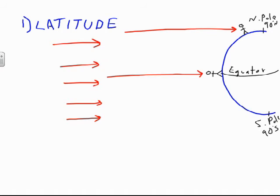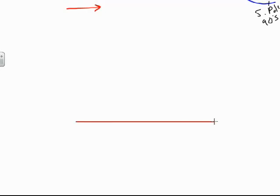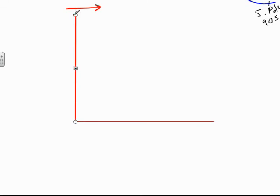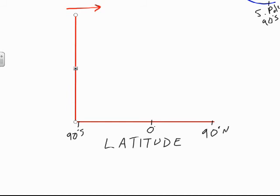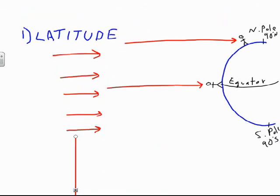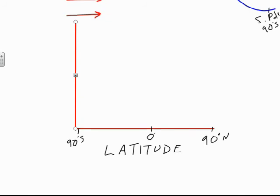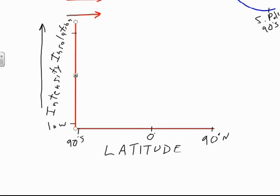We can express this using a quick graph. Here's an x-axis and a y-axis. The x-axis represents latitude, going from the south pole at 90 degrees south, through the equator at zero degrees, to the north pole at 90 degrees north. The y-axis represents the intensity of insolation, increasing upward, so the bottom represents low intensity and the top represents high intensity.